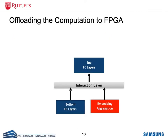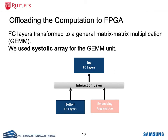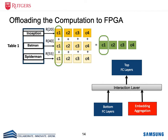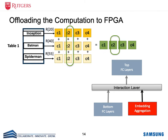Let's see how we can offload different computations to the FPGA on a smart SSD. The first type is the fully connected layer, which can be transformed into a general matrix-matrix multiplication or GEMM. In our design, we use a systolic array-based design for the GEMM unit. Another computation we can offload is the embedding aggregation operation. Using our earlier movie example, the user likes three movies and we need to aggregate their features represented by different columns in order to compute the dense features.